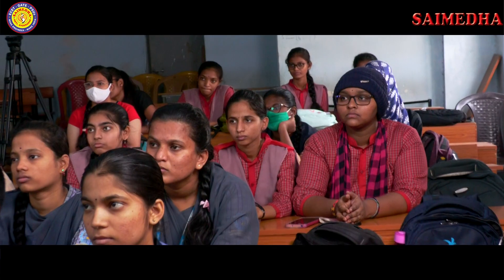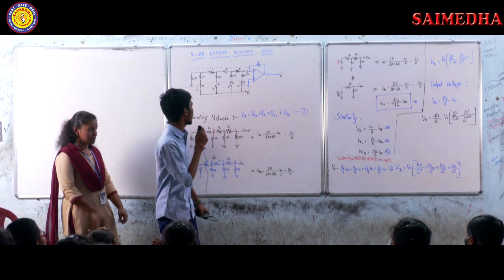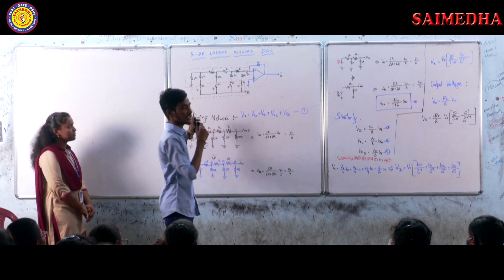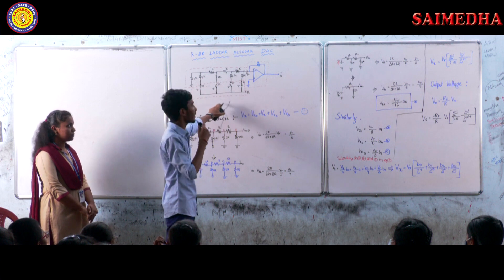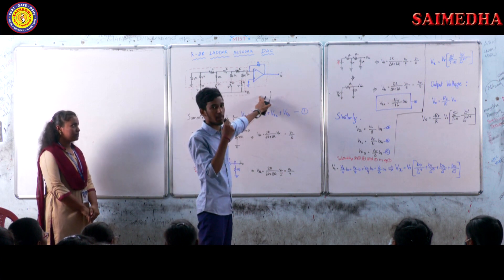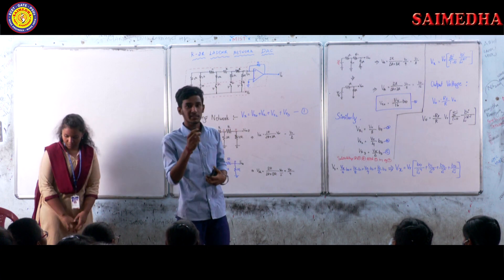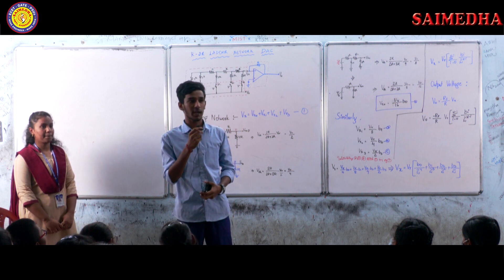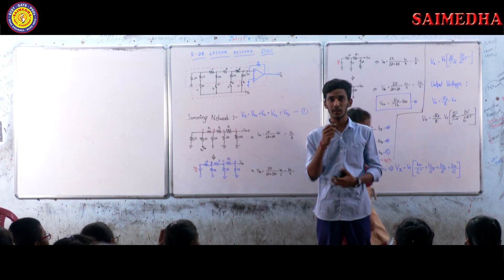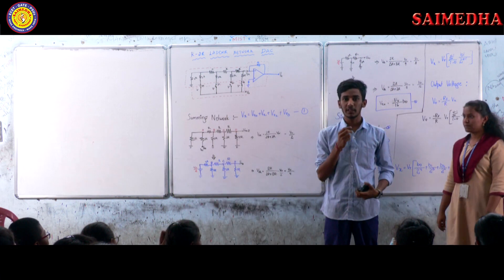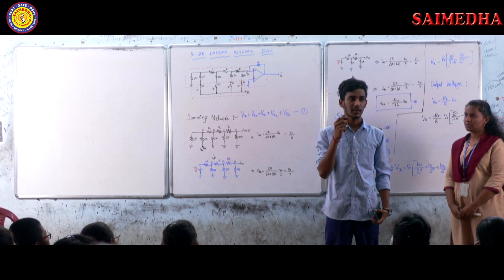This is the circuit diagram of the R2R Ladder Network. It mainly has three sections: the summing network, the electronic switching network, and the inverting amplifier (operational amplifier). In this R2R Ladder Network, only two types of resistors are used — R and 2R. If we increase the number of bits, the resistance does not increase; it always remains constant.